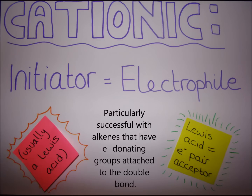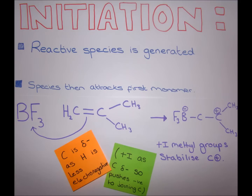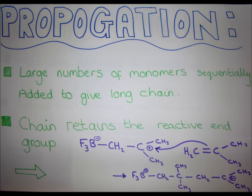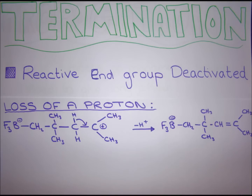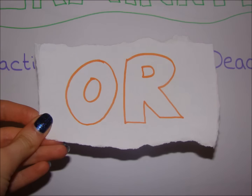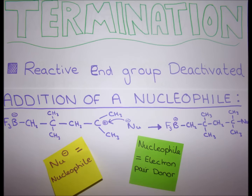Cationic polymerisation uses an electrophile to remove both electrons from the double bond, producing a positively charged carbon. Alkenes continue to add to the chain during propagation. Termination occurs either by the loss of a proton or by the addition of a nucleophile.